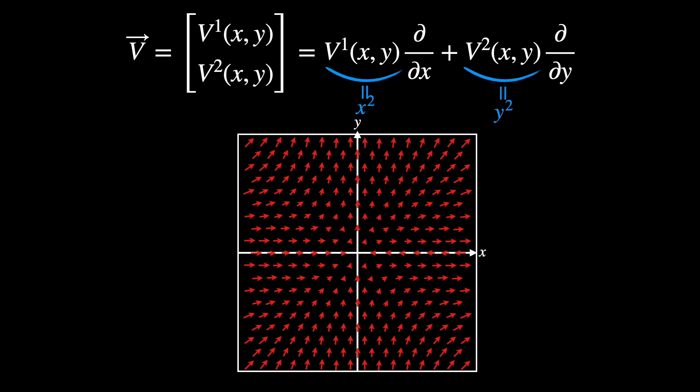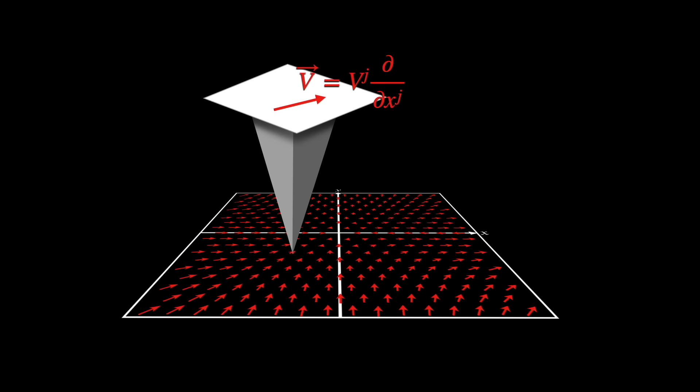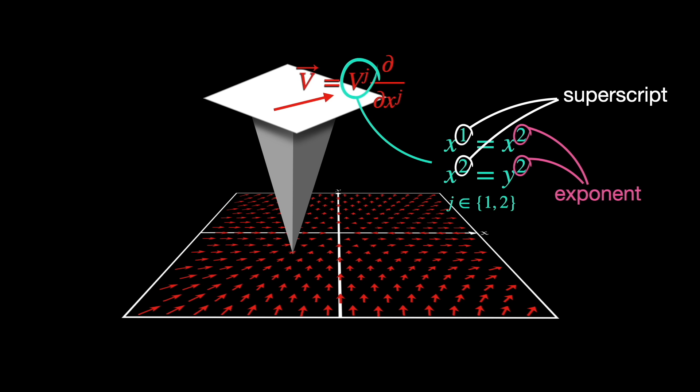To make things less abstract, we pick the specific case in which the vector field is this. Since each of these vectors actually live in the tangent spaces at each point, they can be written as this, where vj are the components, in this case either x1 equals x squared, or x2 equals y squared, for j being 1 or 2, and ∂/∂xj are the basis vectors of each tangent space, written in local Cartesian coordinates x, y.